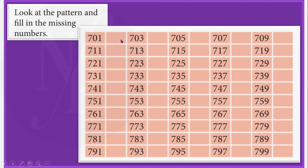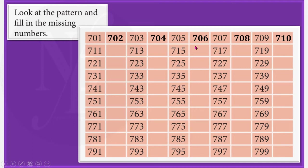So here which number will come? Which number comes after 701? Yes, it will be 702. 703 is printed. Here we should write 704, and so on. 702, 704, 706, 708 and 710. We should write these numbers. Similarly, you also should write these numbers in your textbook using your pencil.